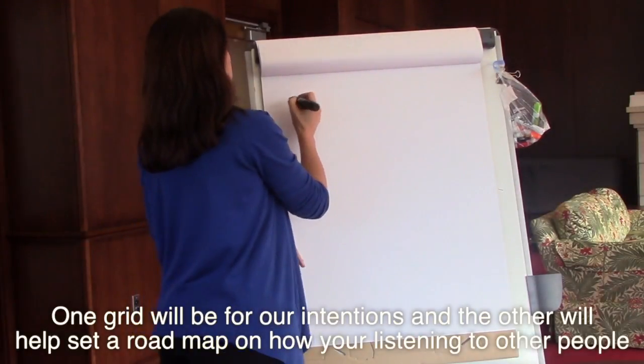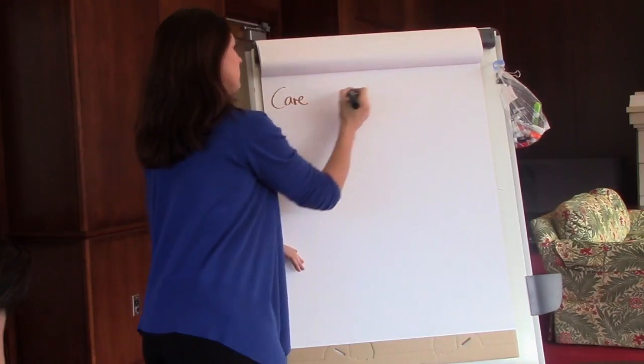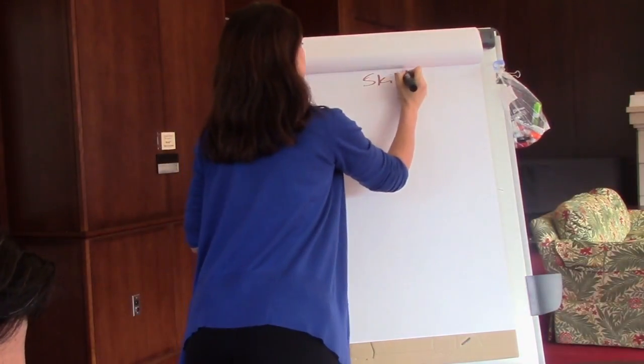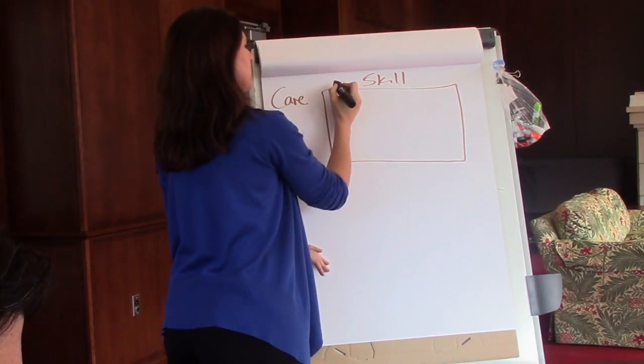The first one is a grid of care versus skill. You can be unskilled or highly skilled, uncaring or deeply caring.